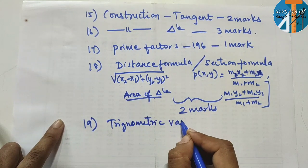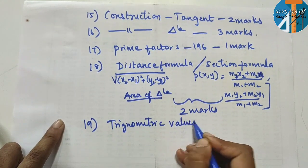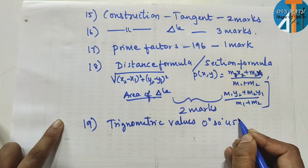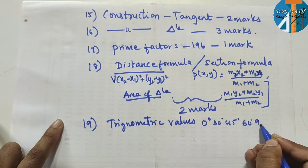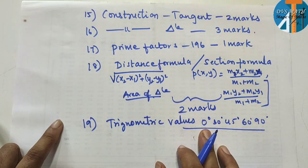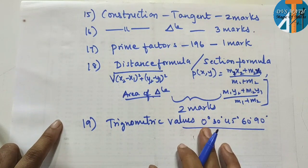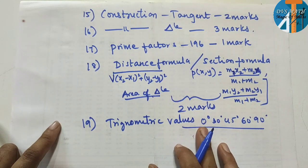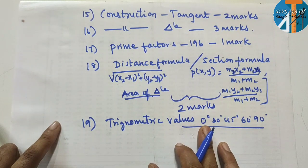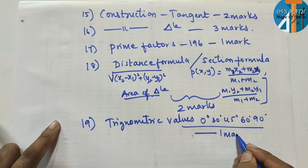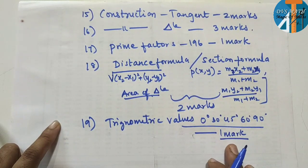Next, trigonometric values: 0°, 30°, 45°, 60°, 90° — there is one box in the textbook with all these values. Practice that box and you can easily recall them. If you need help remembering these values, comment. You can get one mark easily from this.